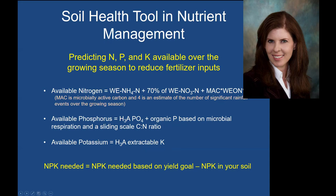Ultimately, the NPK you need each year would be based on the amount needed by the crop given a yield goal, subtracting what would be in the soil using these soil tests. The idea is that if you can predict the nutrients available over the growing season, this should help reduce the total amount of nutrients being put on these plots. However, this value of four for significant rainfall events is not very representative of what we have here, because during the growing season — especially in July and August — we're irrigating every day. So the number of wetting and drying events over the season would be quite a bit higher than in a natural rain-fed system.